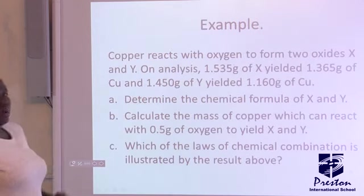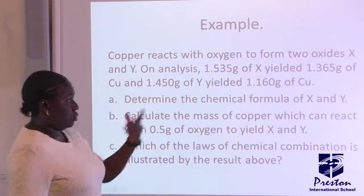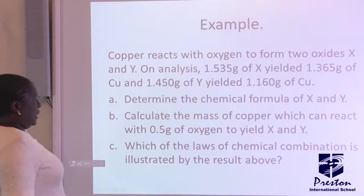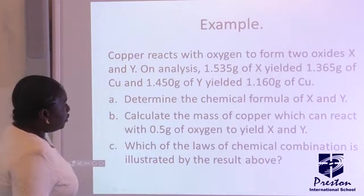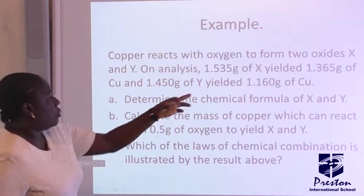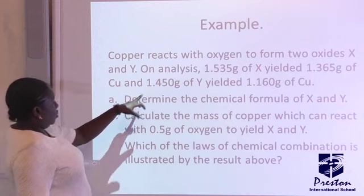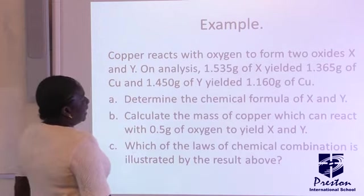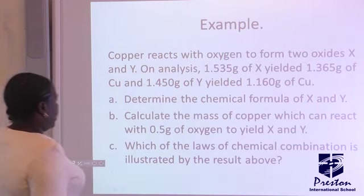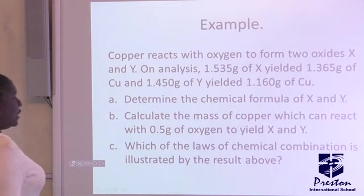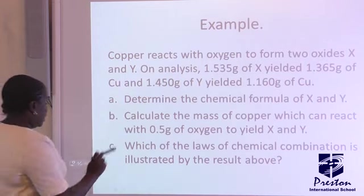Now, let's look at a worked example. Copper reacts with oxygen to form two oxides, X and Y. On analysis, 1.535 grams of X yielded 1.365 grams of copper, and 1.450 grams of Y yielded 1.160 grams of copper. Now, the first question, we have to determine the chemical formula of X and Y.